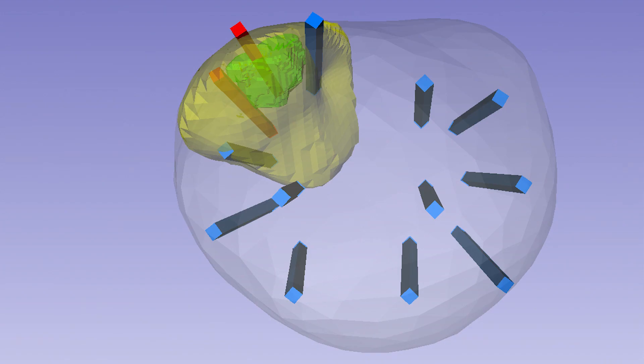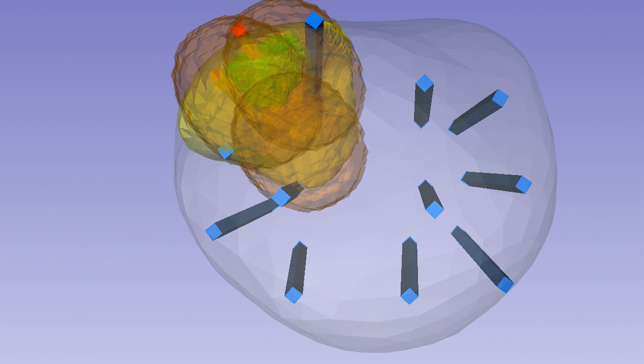Next, laser positions are chosen to encompass the treatment margin. Each ablation has a maximum diameter of 18 millimeters, which is overlaid on MRI.